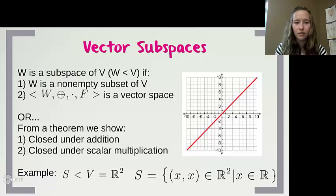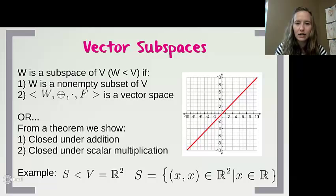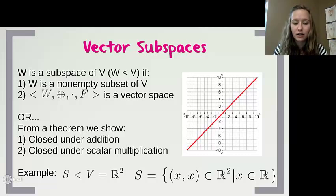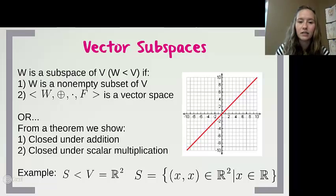One example is the set of vectors notated as (x, x) where x is a real number. This set of vectors is shown on my graph as a red line, which continues out for all real numbers — any vector in this subspace lies on that red line. This is a vector subspace because it is closed under addition: you can add any two of those vectors and the result still lies on the red line. Similarly, multiplying any vector by a real number still gives a result on that red line.